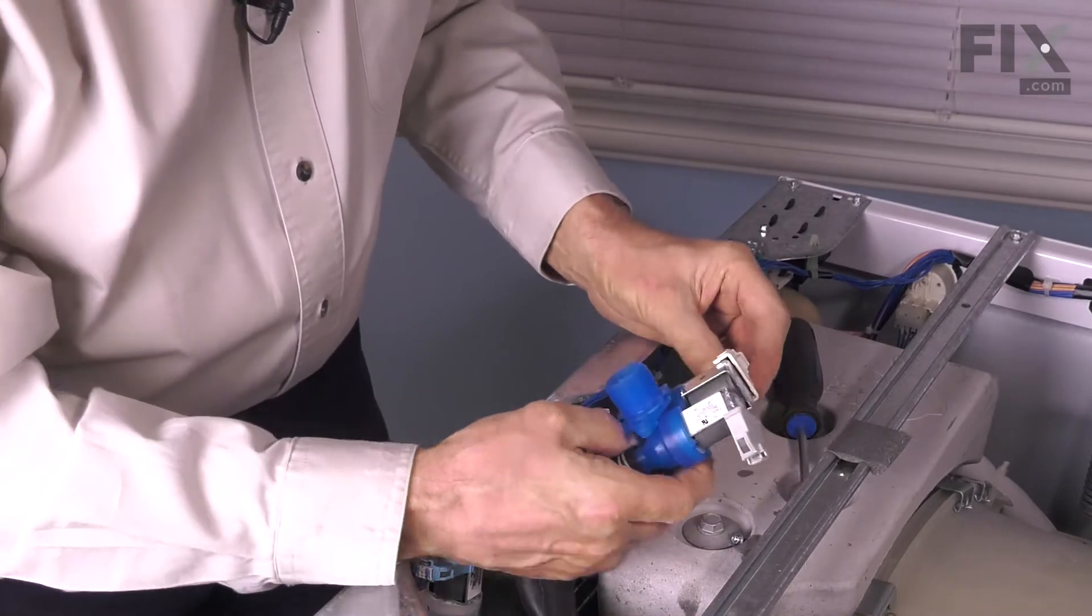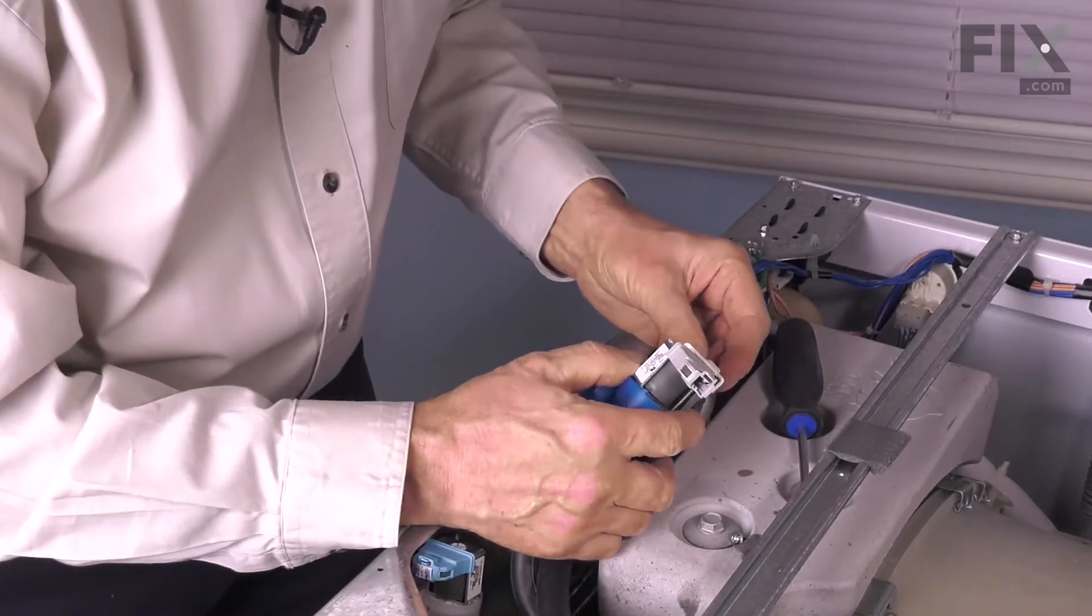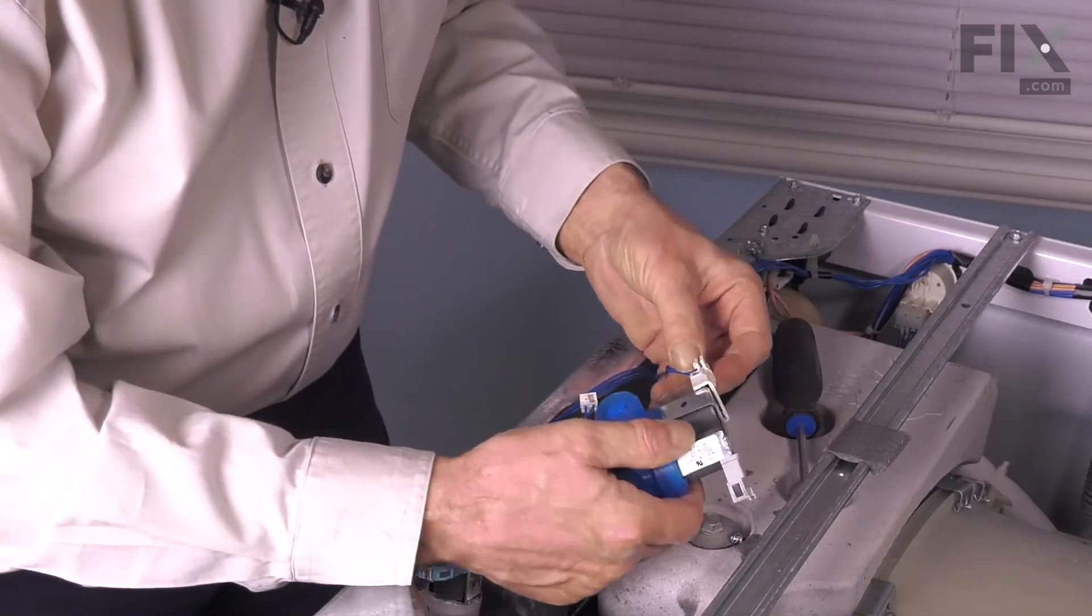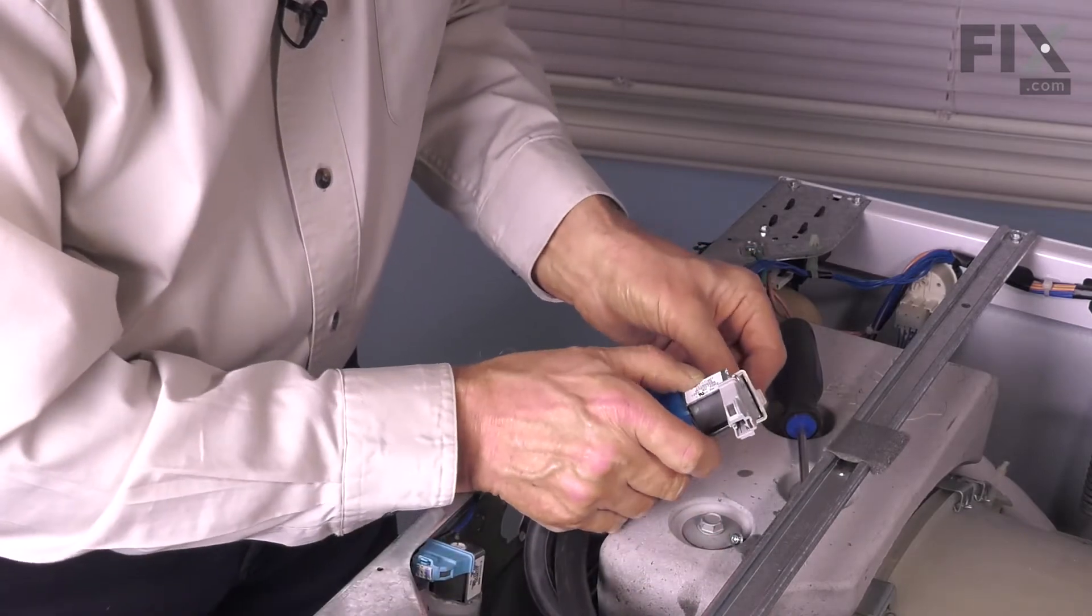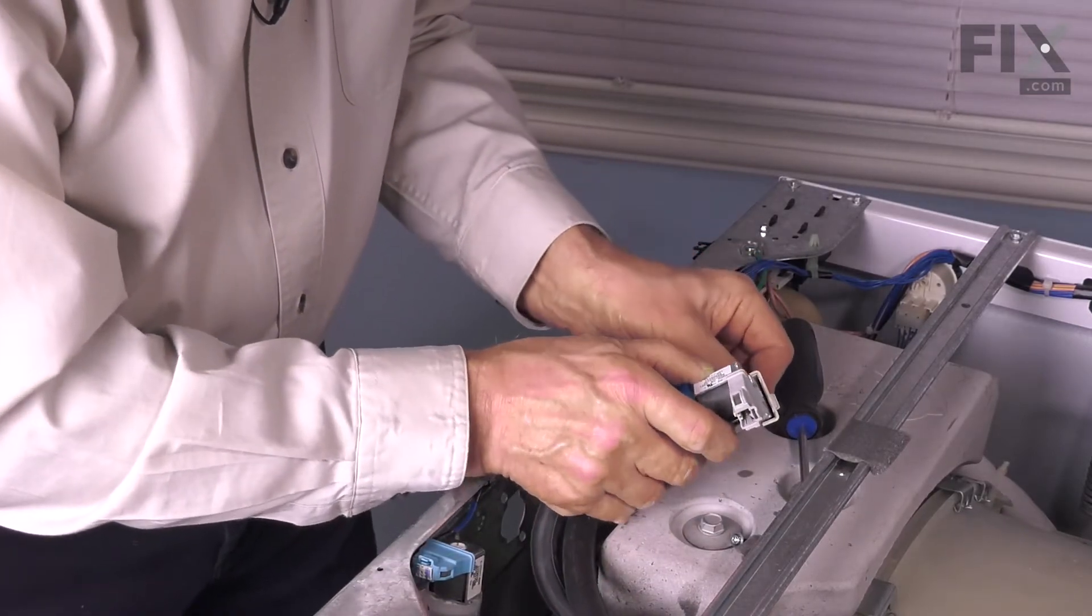Reconnect the harness connector to the bottom coil on the valve and make sure that it's pressed all the way in so that the locking tab engages.